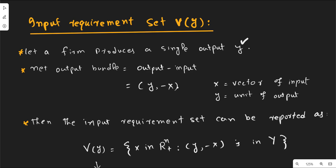So if we know the output and the associated input vector, then the input requirement set can be defined. The input requirement set is denoted by V(y), where y is the associated output. V(y) equals the set of input vectors x in the n-dimensional positive real space, because all dimensions are positive — there is no concept of a negative factor input.